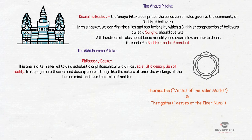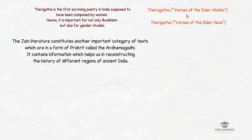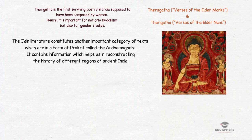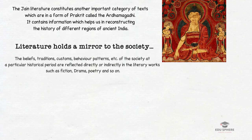Among Buddhist literature we can also find the Theragatha and Therigatha — verses narrated by early members of the Buddhist Sangha. Therigatha is the first surviving poetry in India supposed to have been composed by women, making it important not only for Buddhism but also for gender studies; the writing strongly supports the view that women are equal to men in terms of spiritual attainment. These things are quite important — while writing essays in the UPSC Mains examination you can quote these things. The Jain literature constitutes another important category of texts, usable for information on the history and doctrine of Jainism, doctrines of rival schools, life stories of saints and lives of monks in the Jain Sangha.